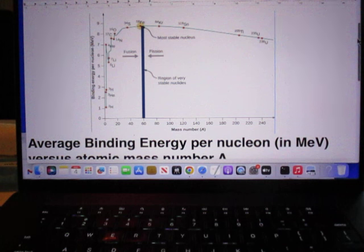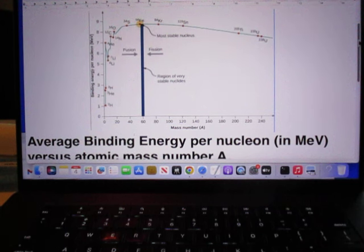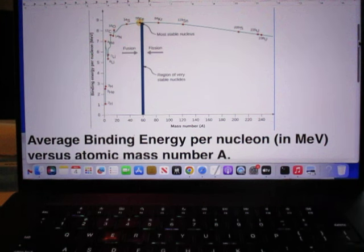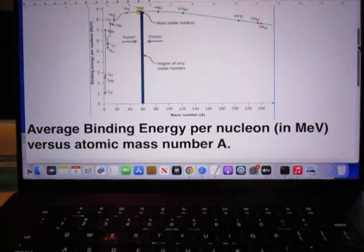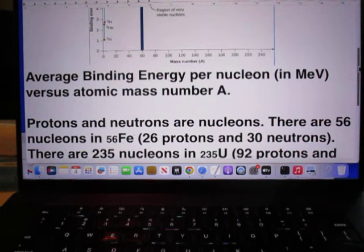In vertical direction, the binding energy per nucleon in million electron volts. In horizontal direction, the mass number A. Chances are you can find this plot somewhere online. The average binding energy per nucleon in million electron volts is plotted here versus atomic mass number A, capital A.